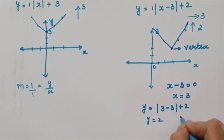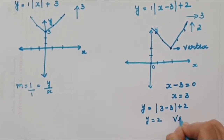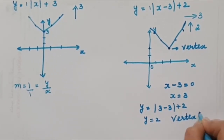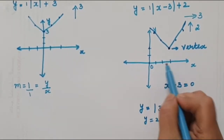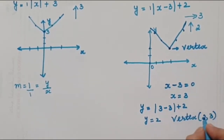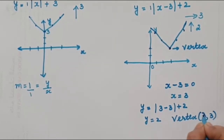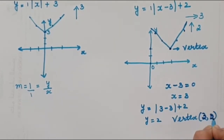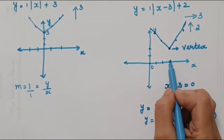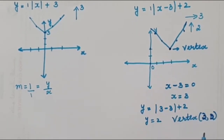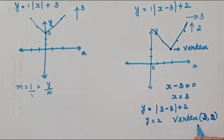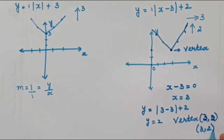So our vertex is (3, 2) — x is 3 and y is 2. Now let us draw a slightly more complicated curve: y = 2|x - 1| + 3. Here we have a slope m = 2. To find the vertex, set x - 1 = 0, so x = 1. Substituting: y = 2(0) + 3 = 3. So the vertex is (1, 3).